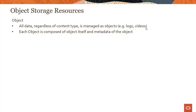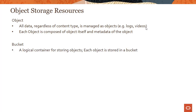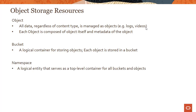Data is managed as objects — whether it's logs, videos, or any content type. Each object is composed of the object itself and its metadata, which describes what the object is and includes details like an identifier. A bucket is a logical container for storing objects, so each object is stored in a bucket. A namespace is a logical entity that serves as the top-level container for all buckets and objects — objects go in buckets, and buckets are placed in namespaces.